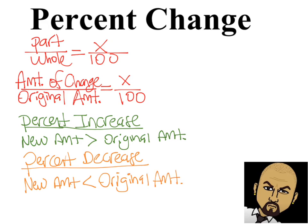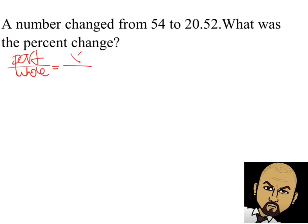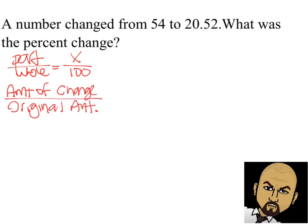Once I get started and go into these, you'll be able to see it. So let's go ahead and get started. Here we have a number changing from 54 to 20 and 52 hundredths. What is the percent change? We're going to use the part divided by the whole equals x percent, which is x hundredths — the amount of change divided by the original amount, representing part divided by whole. So let's go ahead and set up our proportions.